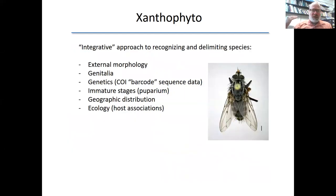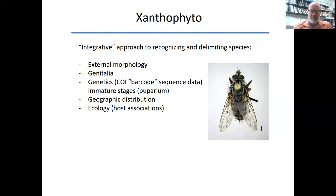I'm not going to bore you with detailed species descriptions of each of the species I've been recognizing, but I want to talk about the integrative approach I've been trying to use to recognize and define species and their relationships. I've been using external morphological characters and dissecting genitalia, especially for males, but also barcode sequences that Jim O'Hara has helped generate from puparia, clues from geographic distributions, as well as information about host associations. Using all these different lines of evidence is going to help me pull apart species groups that would otherwise be difficult if I just relied on one line of evidence.